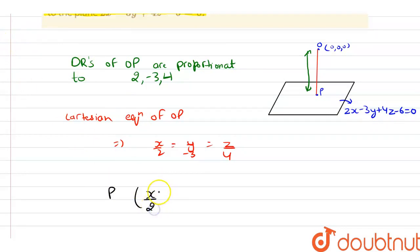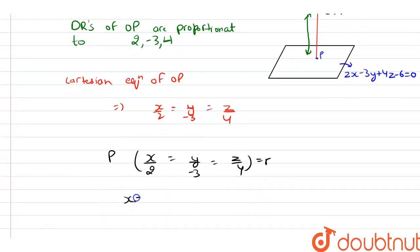So here we have x/2 = y/(-3) = z/4, and this is equal to r. So from here we have a value of x, that is 2r, y = -3r, and z = 4r.